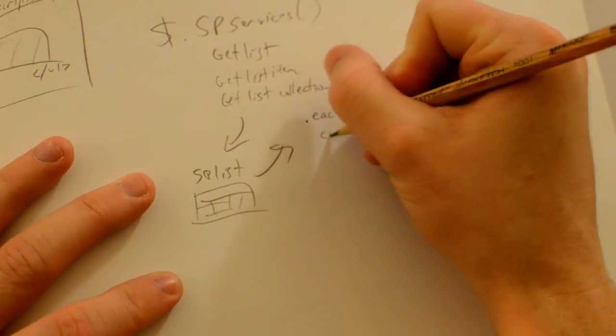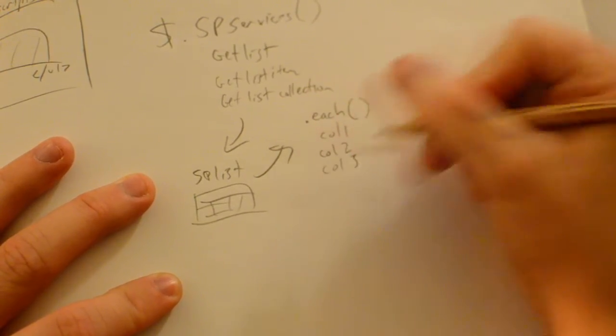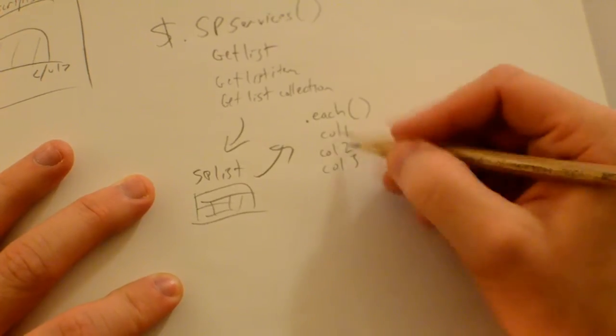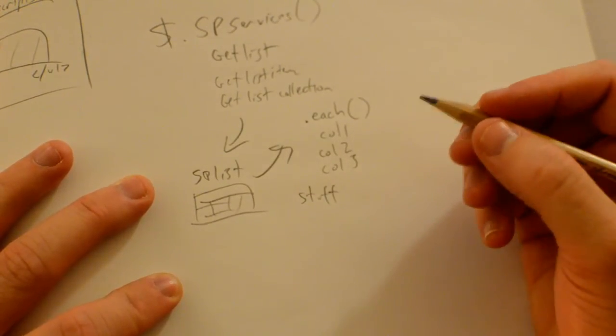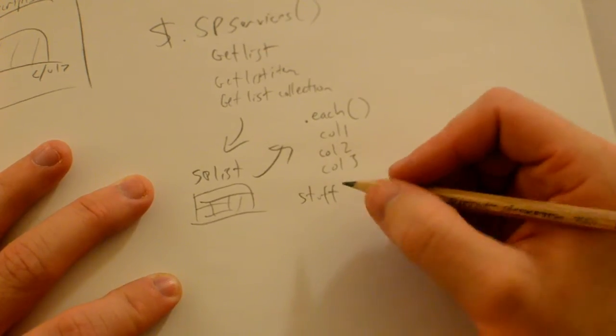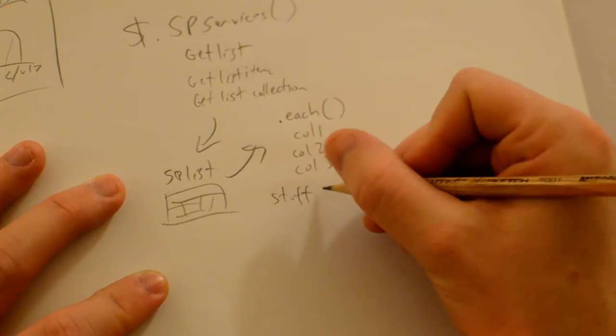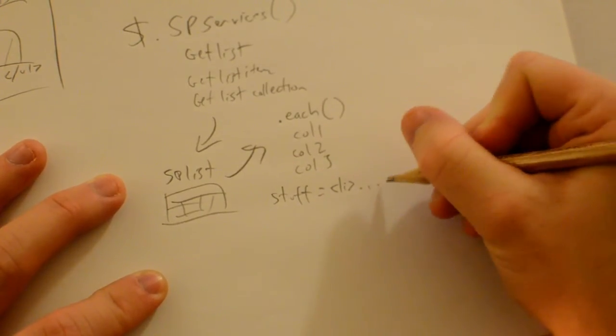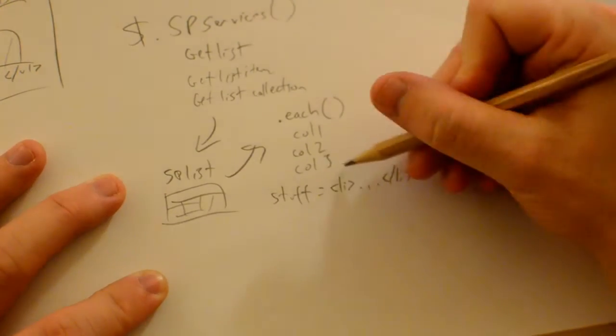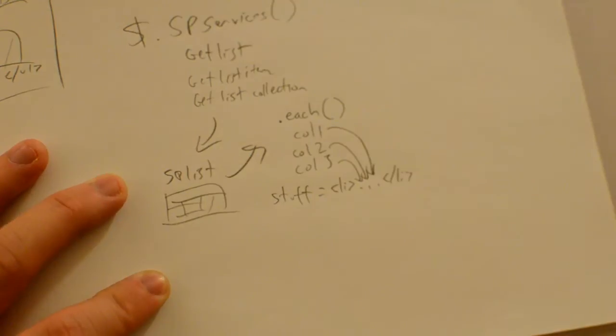We're going to pull some data like column one, column two, column three. We're going to take this data and make a new variable called stuff. Remember, this is just a general overview, so you can look more in depth later. But we're going to create a new variable called stuff and make a new list item. With this list item, we're going to put in all of our column data.